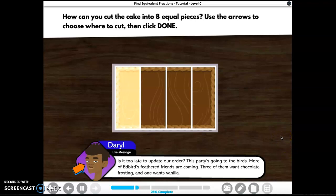Can you help? How can you cut the cake into eight equal pieces? Use the arrows to choose where to cut, then click done.